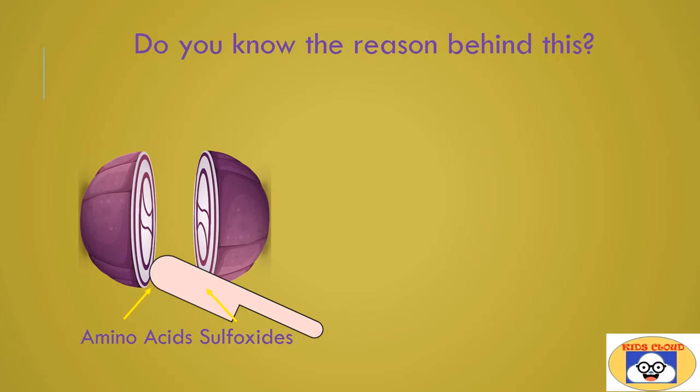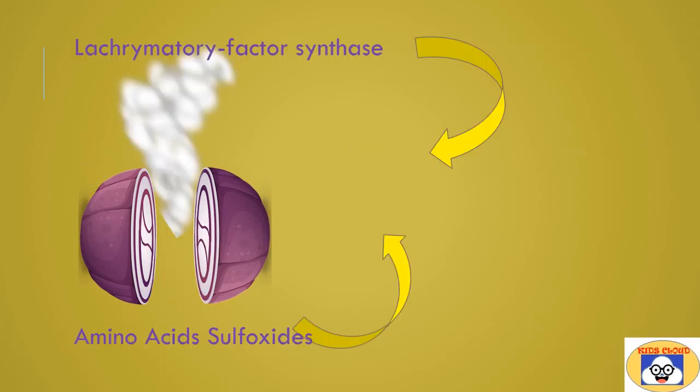An enzyme called lacrimatory factor synthase is released. The released enzyme reacts with amino acid sulfoxides present in the onion...